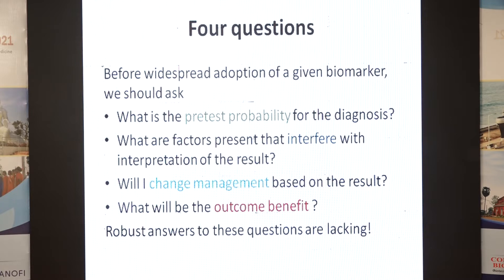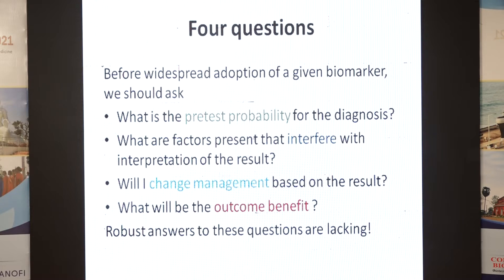Four questions should be asked before sending any biomarker: What is the pre-test probability? Is it sensitive or specific enough? Will any factor interfere with interpretation? Will I change management based on the result? What will be the outcome benefit? These answers are often not there. When residents send a TROP-I or proBNP on rounds, the question is: why are you sending them? What are you looking for?